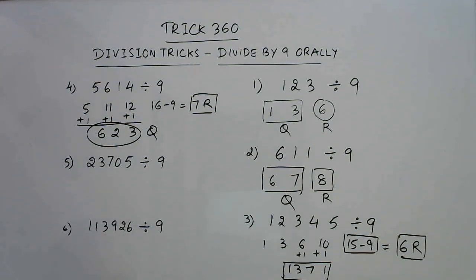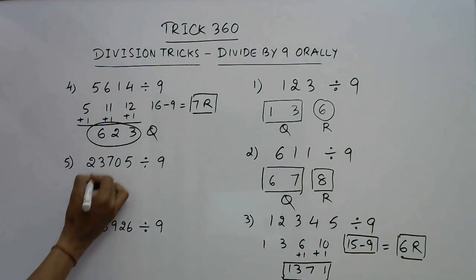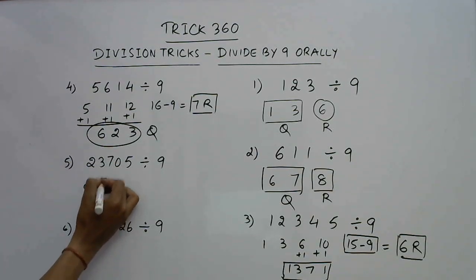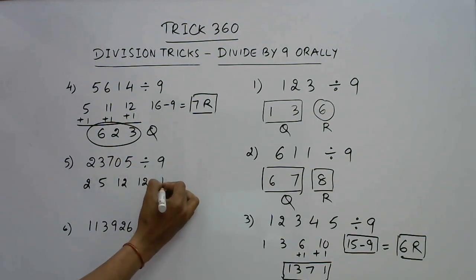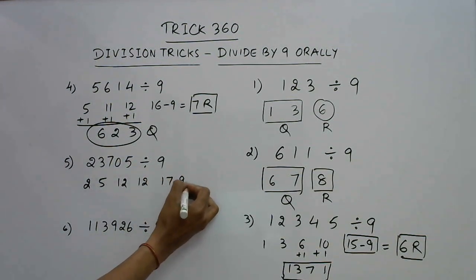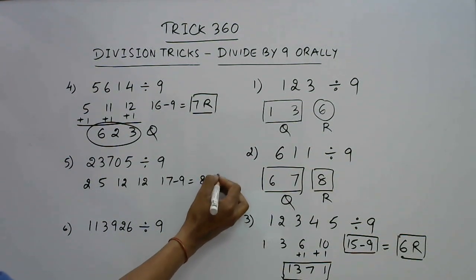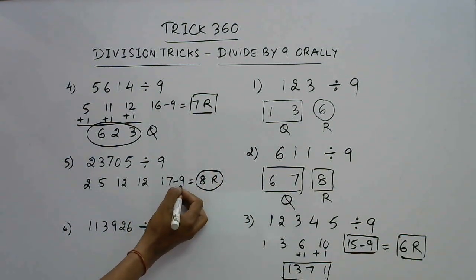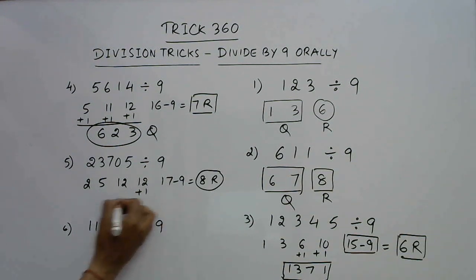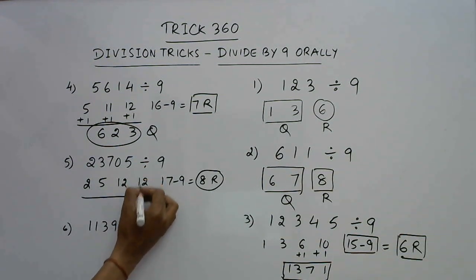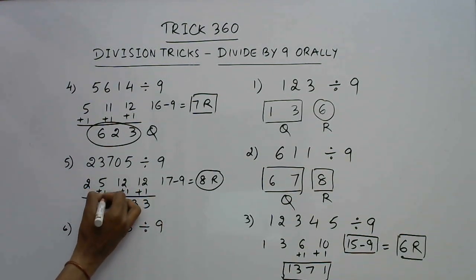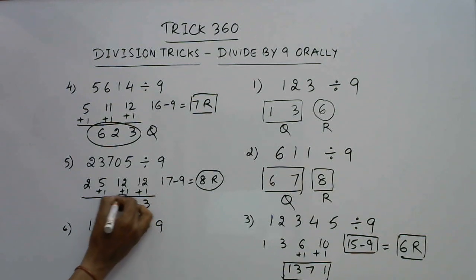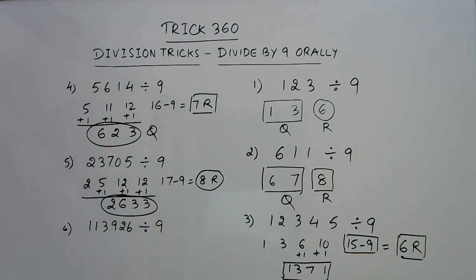Likewise, we can solve more examples. Take 23705. 2 comes down; 2 plus 3 is 5; 5 plus 7 is 12; 12 plus 0 is again 12; 12 plus 5 is 17. Since 17 minus 9 is 8, the remainder is 8. Since we subtracted 1 multiple of 9, add 1 here. 12 plus 1 is 13 — write 3, carry 1; 12 plus 1 is 13 — write 3, carry 1; this becomes 6 and we have a 2 here. So 2633 is the quotient and 8 is the remainder.